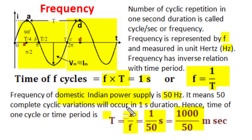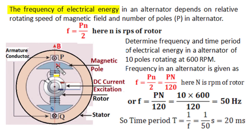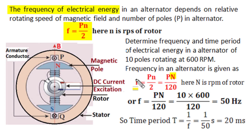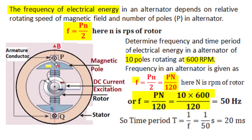The frequency of electrical energy generated in a rotating generator depends upon the relative rotating speed of the working magnetic field and conductor, and the number of poles in the alternator. It is given by the relation f = pN/2, where p is the number of poles and N is revolutions per second. If revolutions per minute are used, then frequency f = pN/120. For a 10-pole machine rotating at 600 RPM, the frequency comes out as 50 Hz, and the time period as 20 milliseconds.